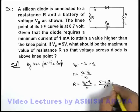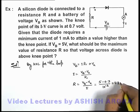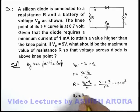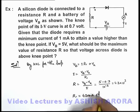On calculation this will give 4.3 into 10 to the power 3. So the value of resistance which we need for this purpose is 4300 ohms. That will be the answer to this problem.